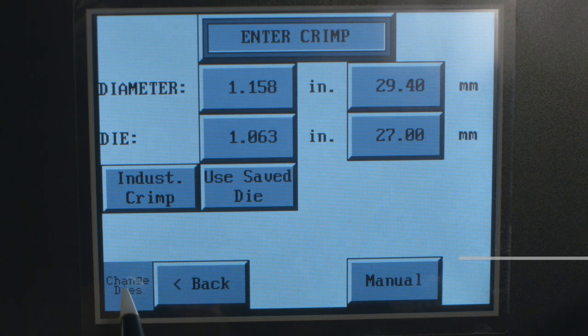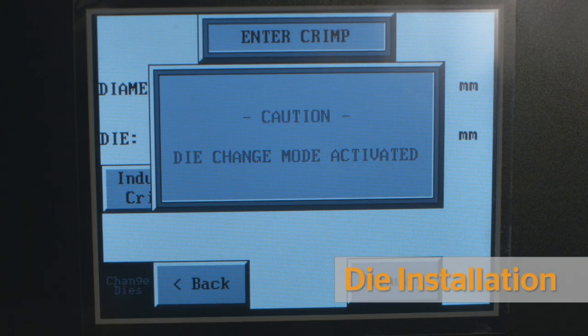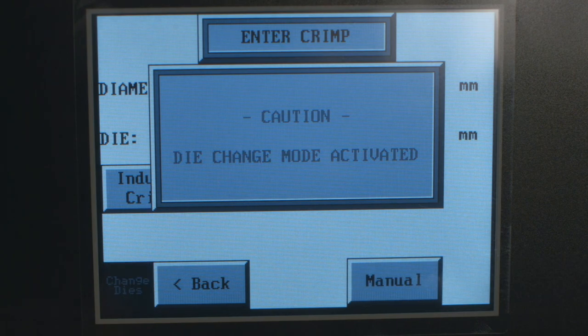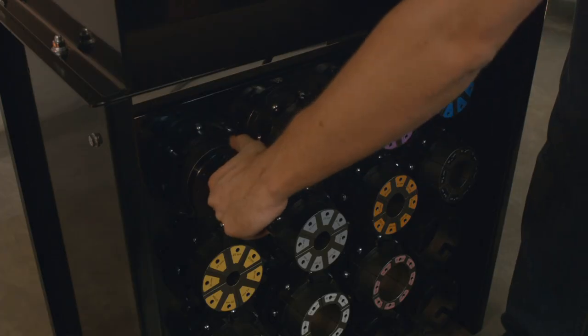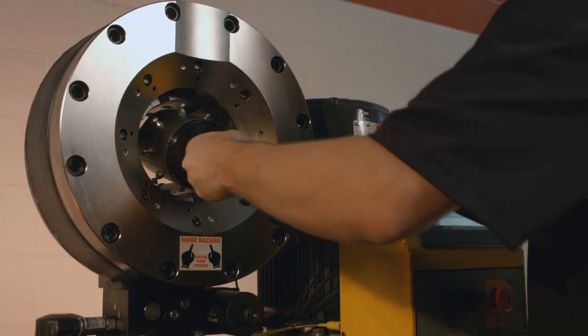Then, place the crimper in die change mode by pressing the change die button in the bottom left-hand corner of the controller. This mode allows the operator to open and close the crimper to the full extent of its travel.